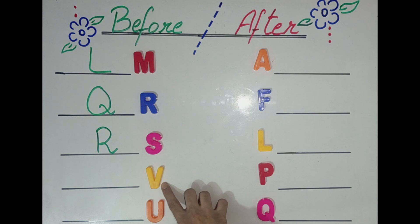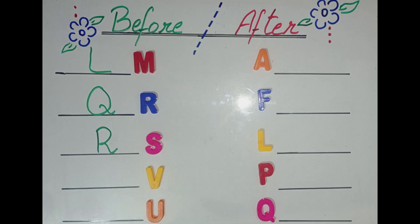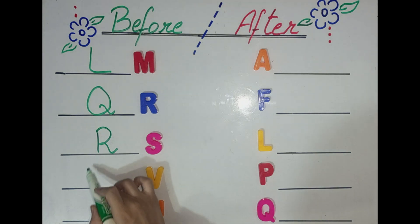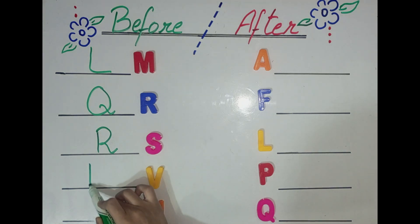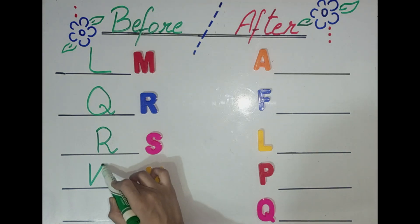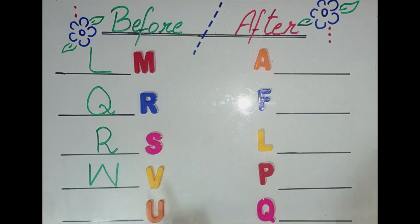Do you know which letter is this? V, V. What letter comes before V? W. Well done. W.